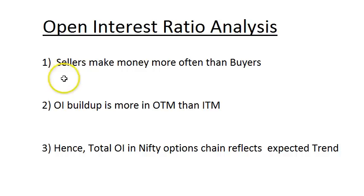The first point is that sellers make money more often than buyers, and in options especially, out-of-the-money contract sellers tend to win more often than buyers — that's a known truth. Based on this we can also say that sellers are normally smarter than buyers, because they bring more money to the table. More margins are required for sellers; for buyers there's no margin required, you just need to pay the premium.